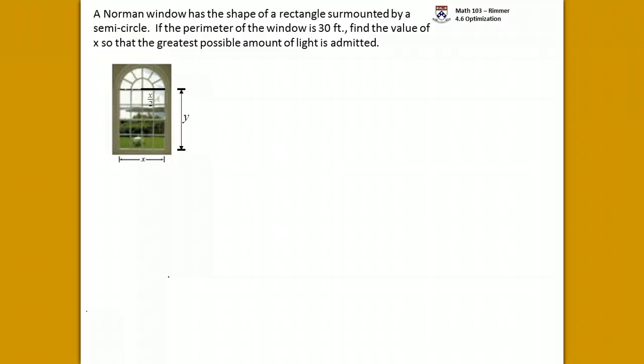When I say the amount of light admitted through the window, basically the bigger the area, the more light will be admitted. So we'll go with area. What's the area of this window? There's two parts. There is the rectangle, which is x times y.